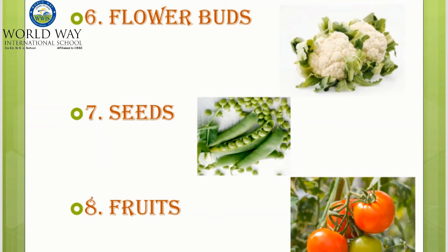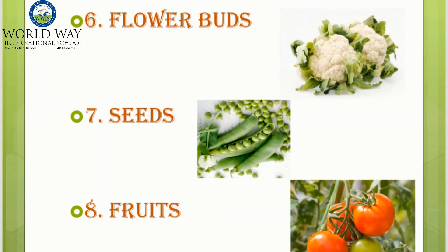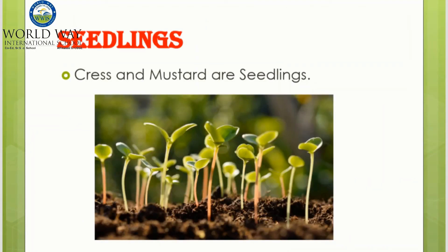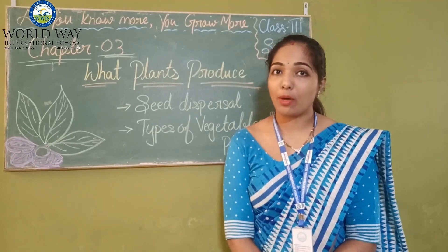Ground nuts grow underground. Some vegetables are really fruits — the tomato is a fruit, and the chili is a fruit too. These are the different types of vegetables. This is the image of a seedling — cress and mustard are seedlings of a plant that form a new plant from a seed.